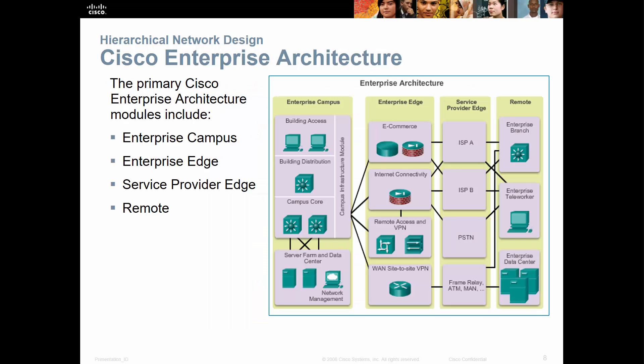The enterprise architecture includes things like campus edges, enterprise edges, remote connections, and all the appropriate edges. The edge of the network is where traffic is leaving your network. We have a campus or enterprise edge, and a service provider's edge — because we don't care how data flows through our service provider, as long as it goes through it.